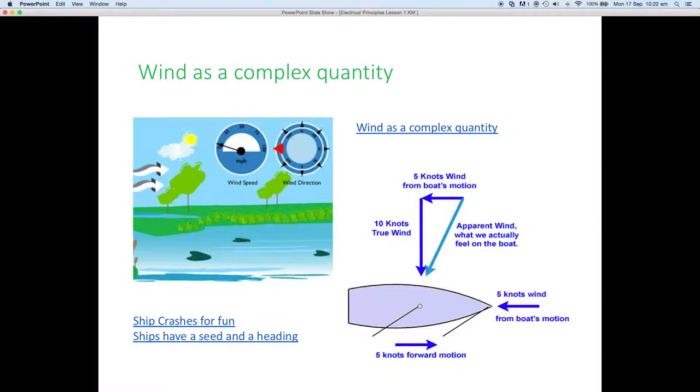So, a boat as it navigates across the ocean also has a complex quantity that describes its speed and its direction, all in the one value. So, you can see here with a sailing boat, if you have a wind of 10 knots against the side and 5 knots of motion against, you actually end up with an apparent movement across here.